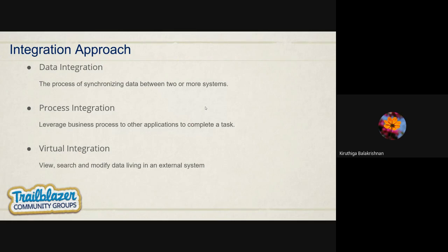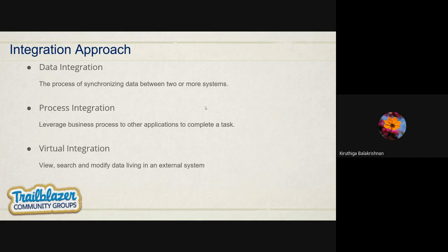In terms of process integration, it's about leveraging a business process in one application to complete a task. If you've built a tedious business process in one application and another part of the business also needs that process, you don't have to rebuild it. Instead, through integration, you can use that process living in the other system — send the data, complete the task there, get back the results, and store them in the originating system.